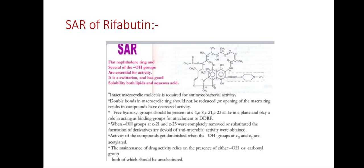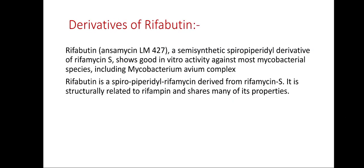The maintenance of drug activity relies on the presence of either an OH or carbonyl group, both of which should be unsubstituted. Rifabutin is a semisynthetic spiropiperidyl derivative of rifamycin S. It shows good in vitro activity against most mycobacterial species including mycobacterium avium complex. It is structurally related to rifamycin and shares many of its properties.